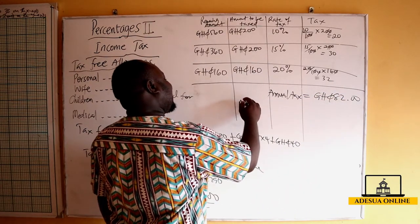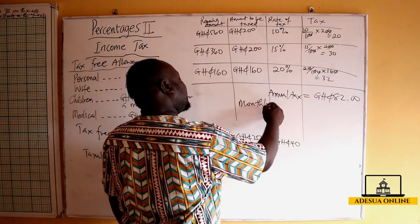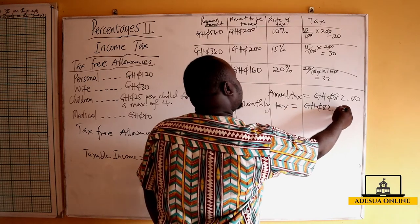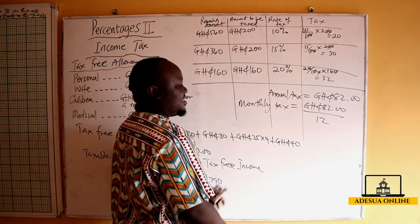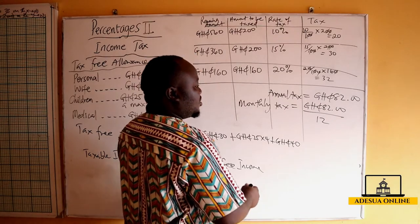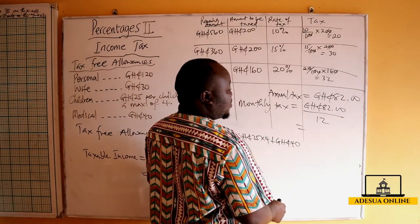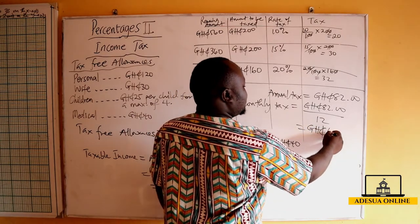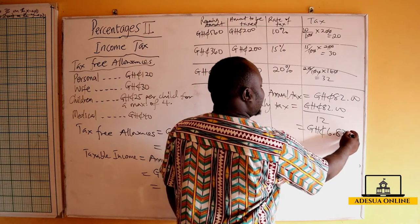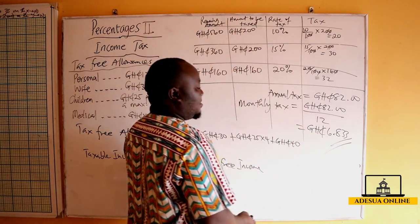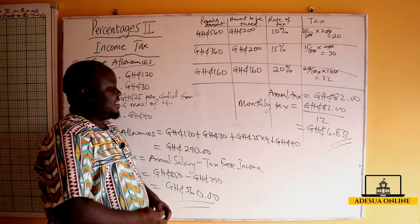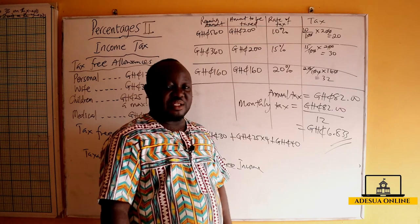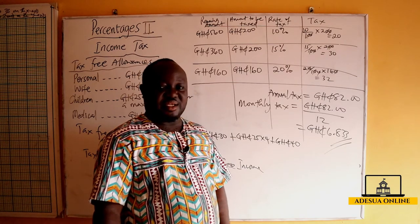So our annual tax is 82 Ghana. For the monthly tax, we divide by 12 since this is calculated over a year: 82.00 ÷ 12 = 6.833 Ghana. This is the monthly tax the man will be paying every month, which is approximately 6.833 Ghana cedis.